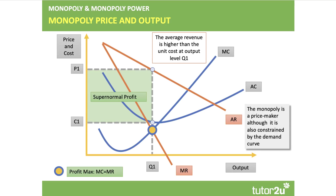The monopoly is a price maker — they can set the price in the absence of regulation, although the monopoly is always constrained by their demand curve. They can choose the price or the output but they can't choose both. At Q1, price P1 is much higher than the unit cost C1, so the monopoly is making a high level of supernormal profit. In the long run in a competitive market new firms would compete away some of that profit, but in a monopoly they are able to use barriers to entry to maintain that supernormal profit.